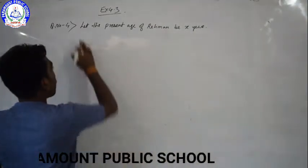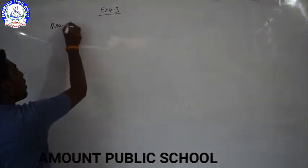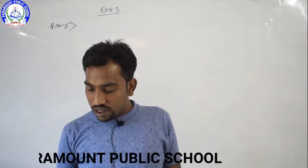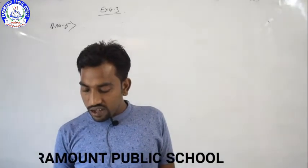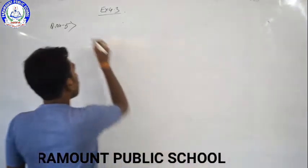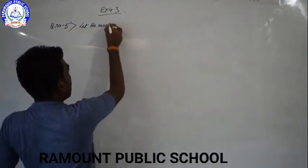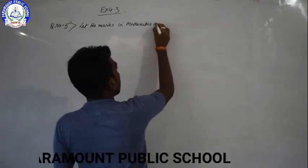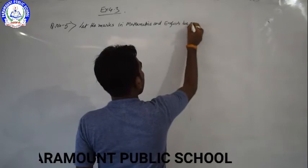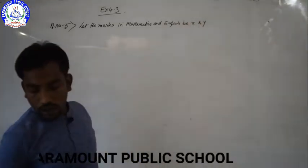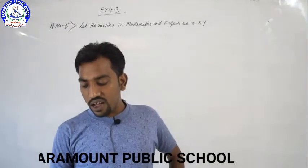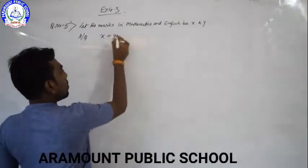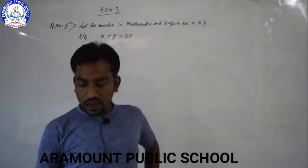Question number 5. In a class test, the sum of Cephali's marks in mathematics and English is 30. Let the marks in mathematics and English be X and Y respectively. As per the question, X plus Y is equal to 30.